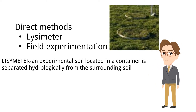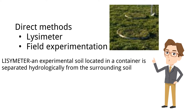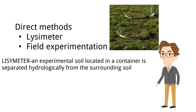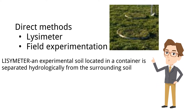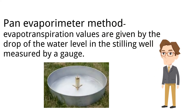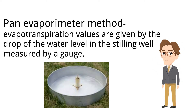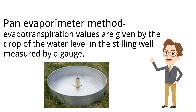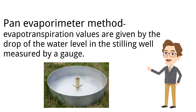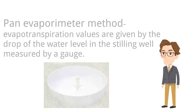A lysimeter is an experimental soil located in a container that is separated hydrologically from the surrounding soil. In the pan evaporimeter method, evapotranspiration values are given by the drop of the water level in the stilling well, measured by a gauge.